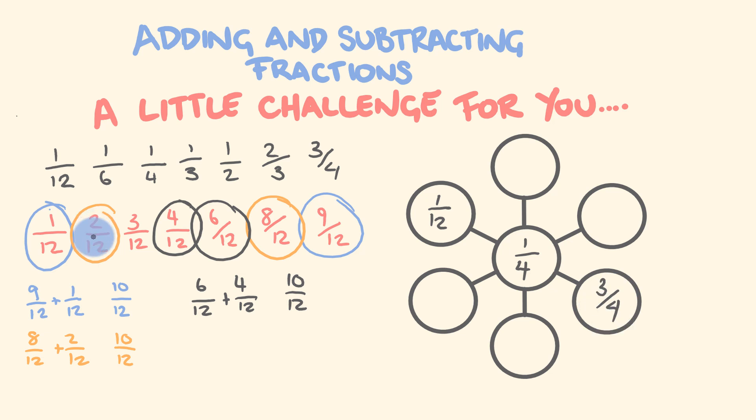For another row, what we have is the one which is equivalent to 2 over 12, which is 1 sixth, and the one which is equivalent to 8 over 12, which is 2 thirds.